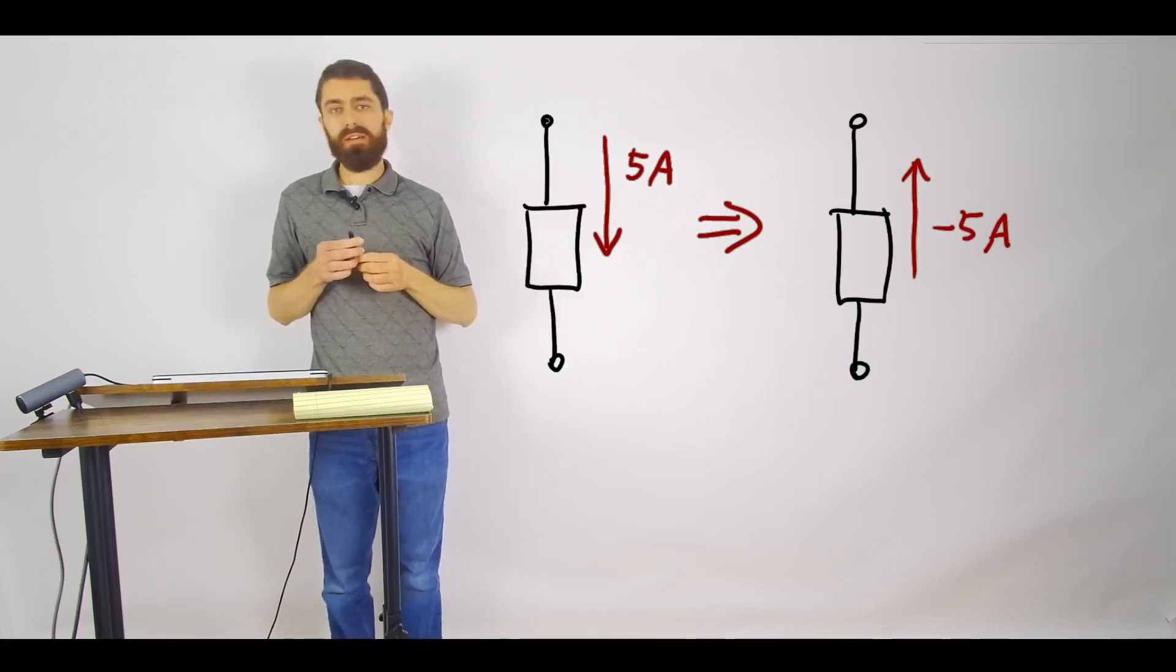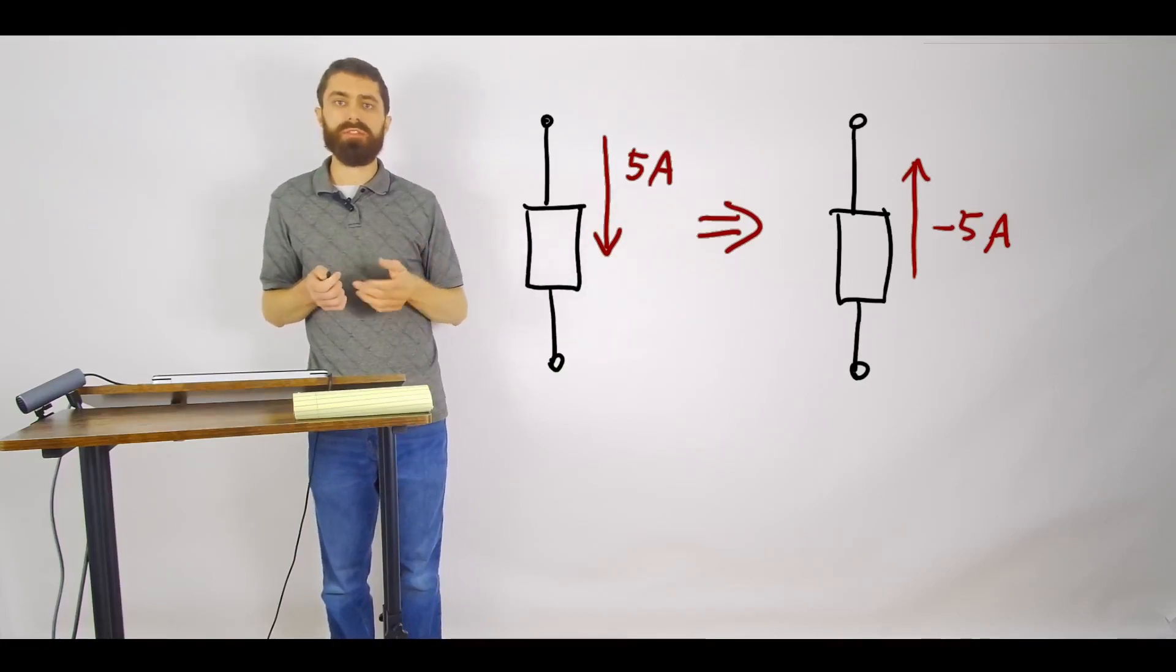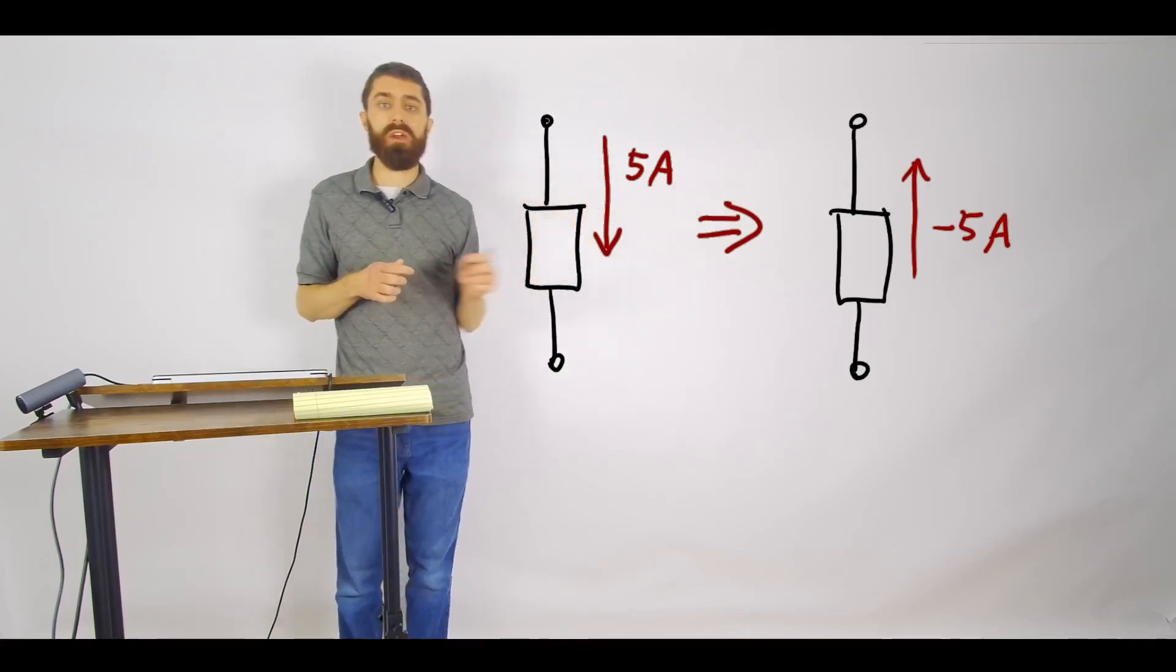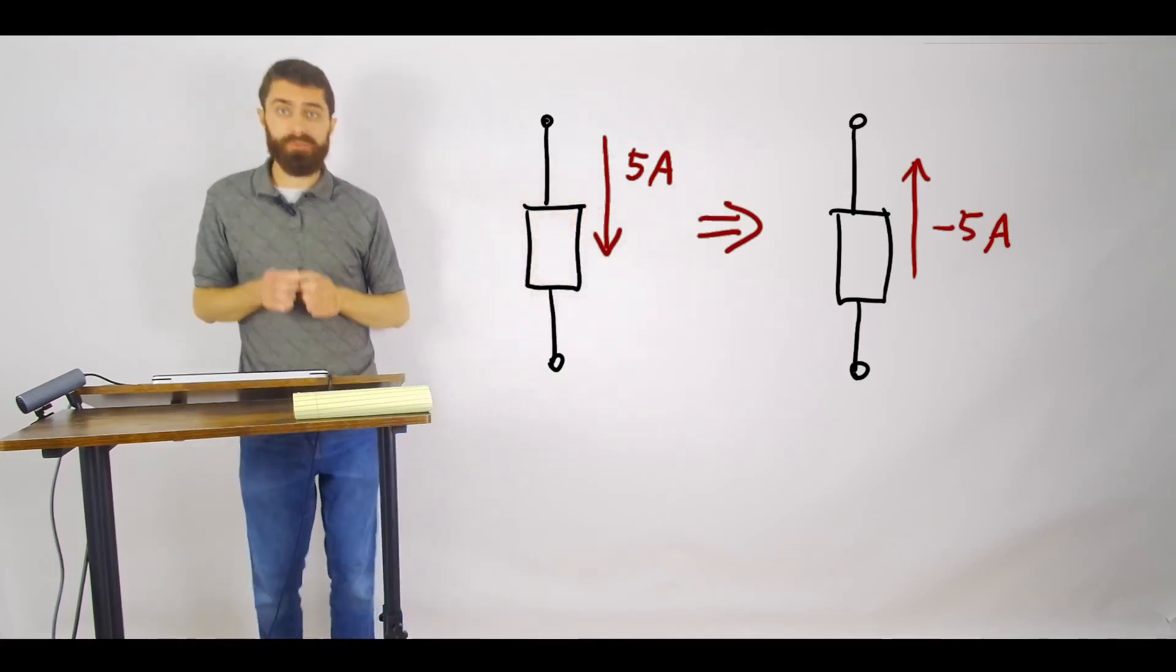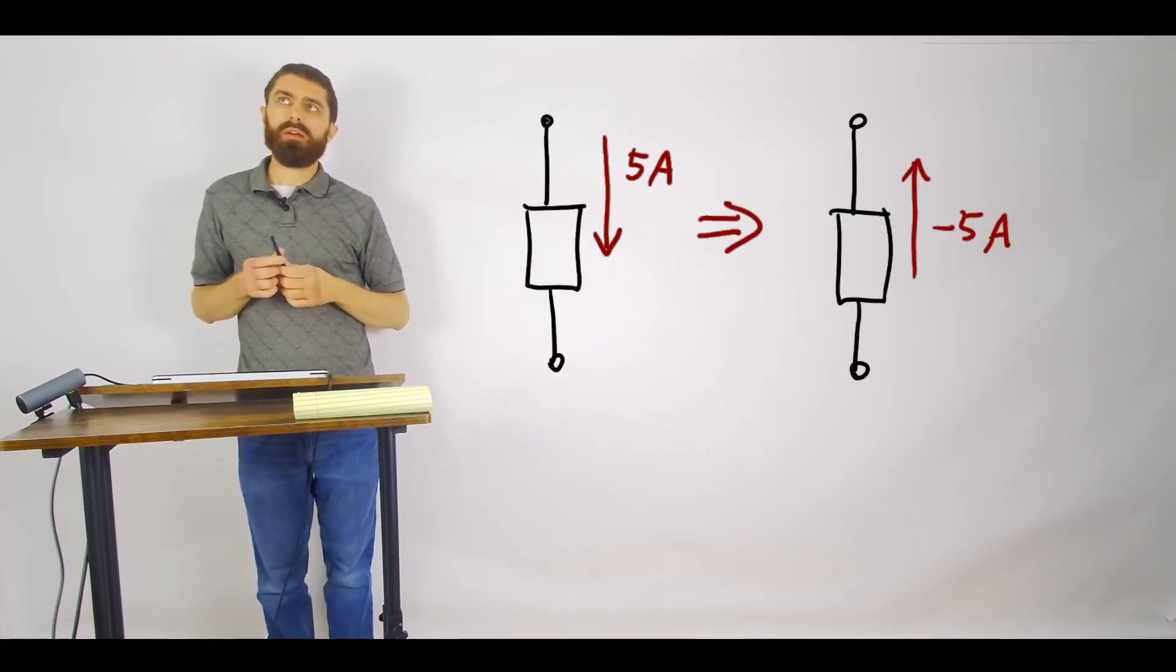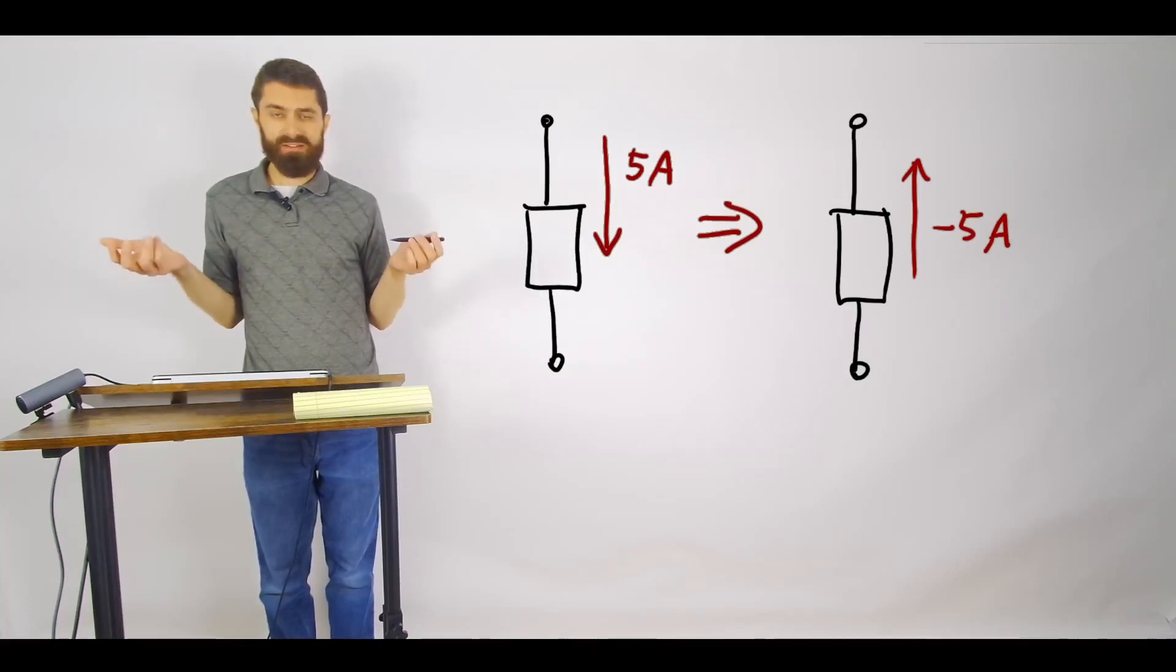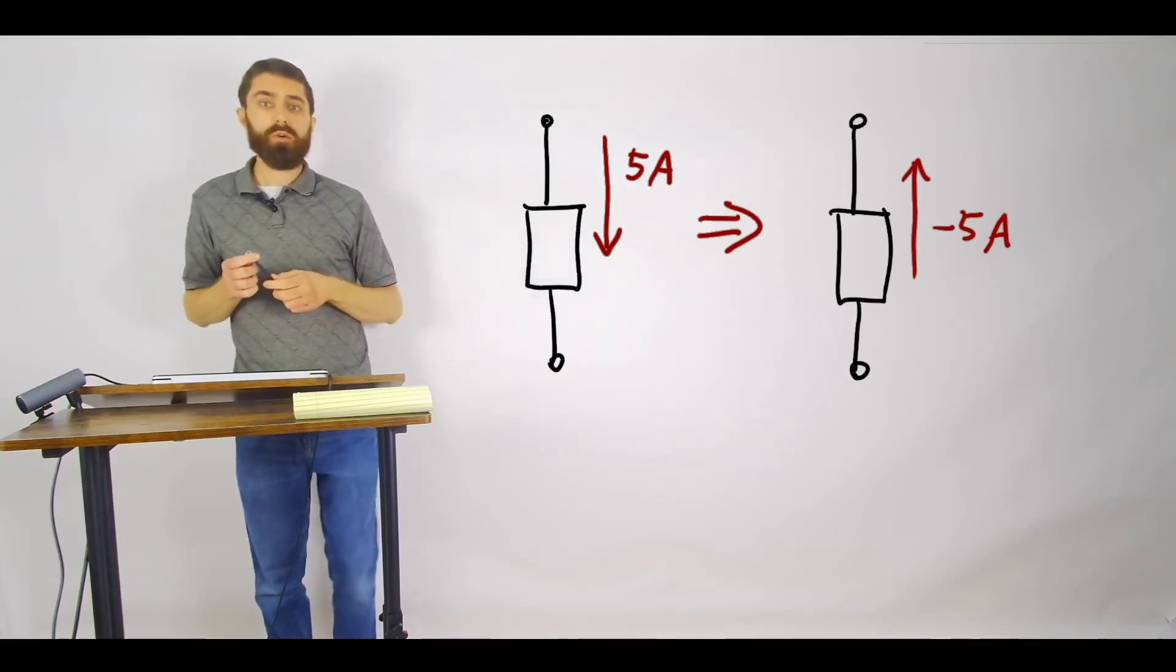So when somebody's saying oh the current is this value through this wire, it's always important to ask what direction and how you've defined your arrows. Now the cool thing about circuits though, when you're solving for currents and voltages, you don't know actually which direction it's going to be. And that's okay.